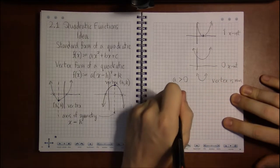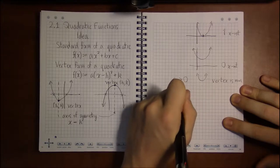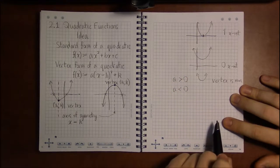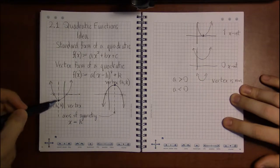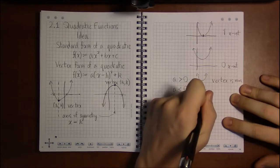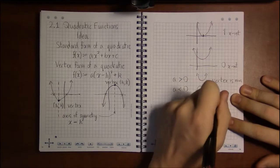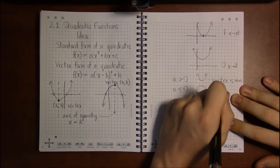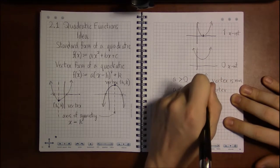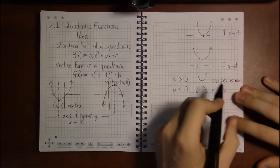On the other hand, if a is negative, the parabola won't be opening up, it'll be opening down, and this makes the vertex our extreme point, the highest point on the graph.